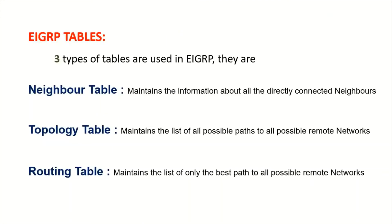There are three types of tables used in EIGRP. The first is the neighbor table, which maintains information about all directly connected neighbors. The second is the topology table, which maintains a list of all possible paths to all possible remote networks. The third is the routing table, which maintains the list of the best path to each possible network.